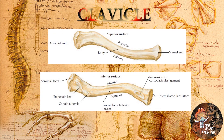Now let's talk about the anatomical structure of the clavicle. In this picture you can see the superior surface, and here you can see the inferior surface. The clavicle has two ends: one is the medial end, which connects with the manubrium of the sternum, and the other end is the acromial end, which connects with the acromion process of the scapula.